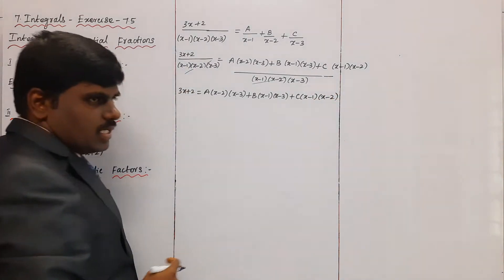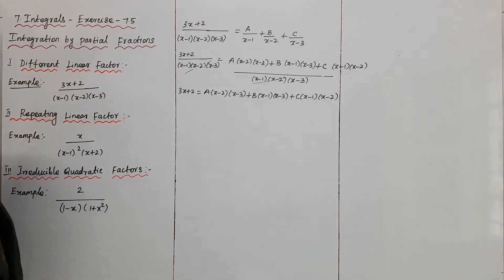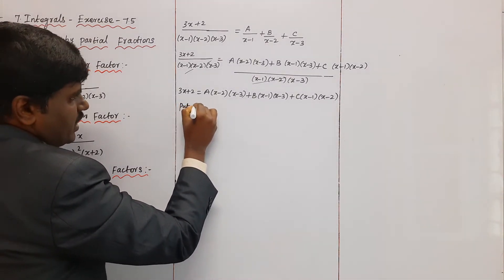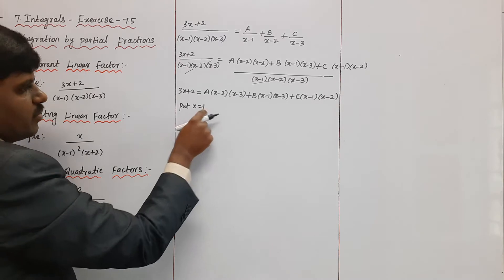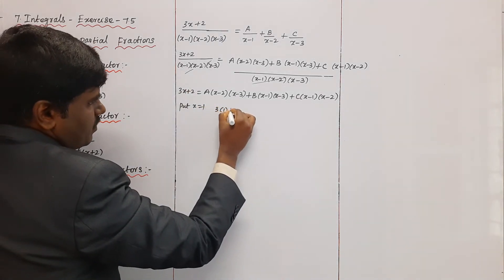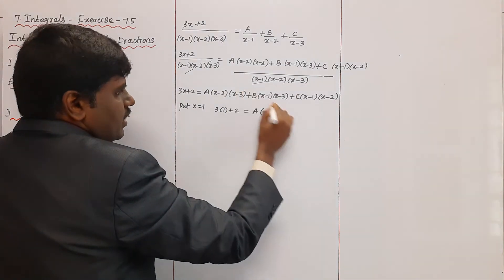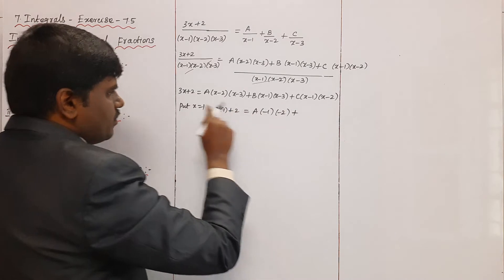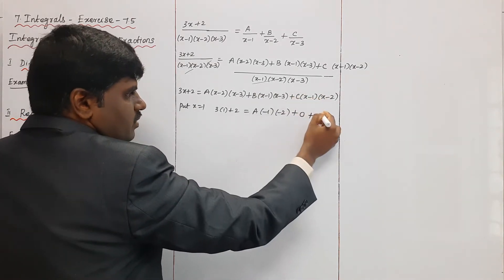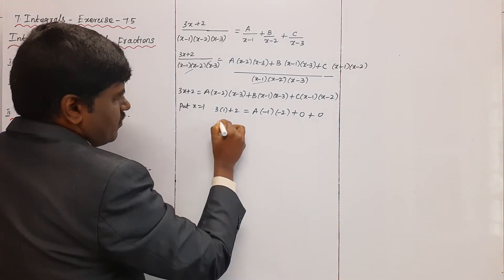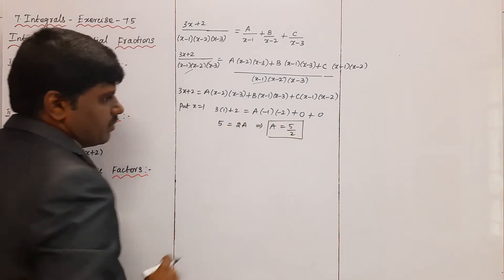The different linear factors give x = 1, 2, 3. First, substitute x = 1: the left side gives 3(1) + 2 = 5. The B and C terms become zero since (1−1) = 0. So 5 = A(1−2)(1−3) = A(−1)(−2) = 2A, therefore A = 5/2.